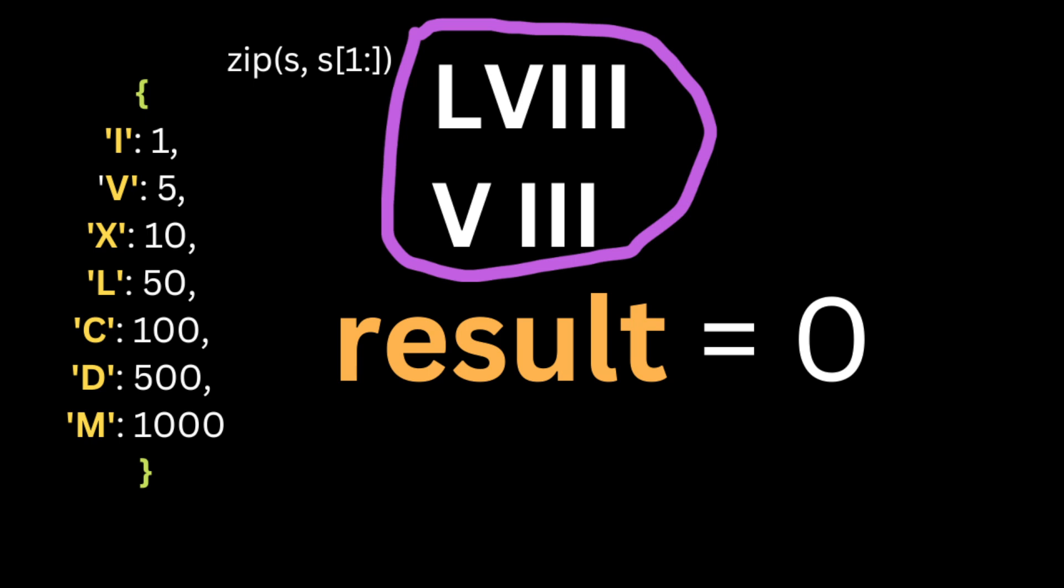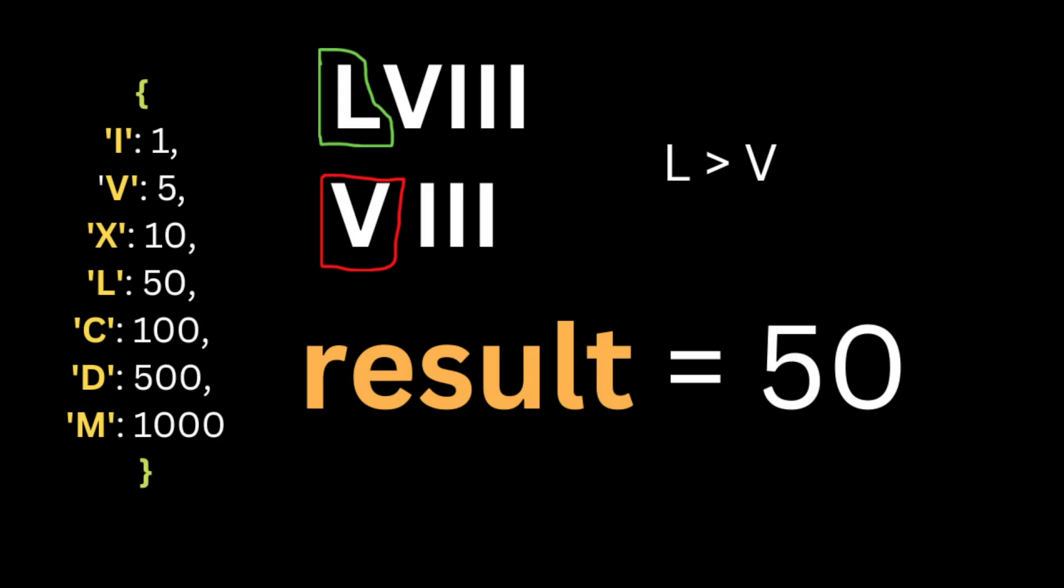After that, we're going to start looping over the string with the help of the zip function. The zip method in Python takes one or more iterables as input parameters or arguments and merges each of them element-wise to create a single iterable. And we're going to hold the current value and the next value so we can do a comparison.